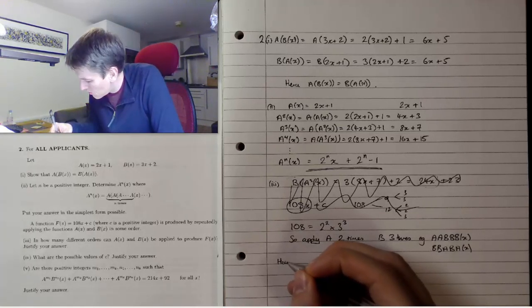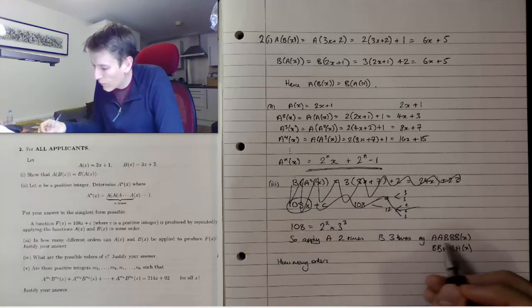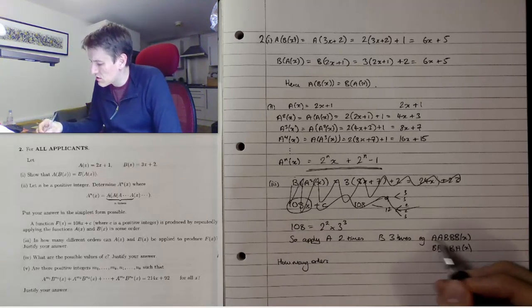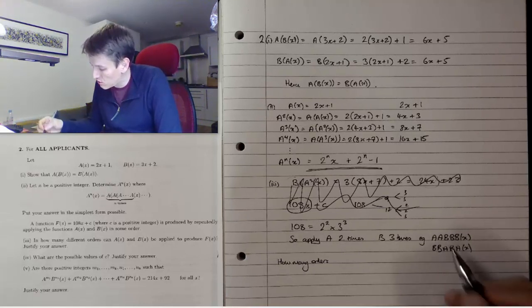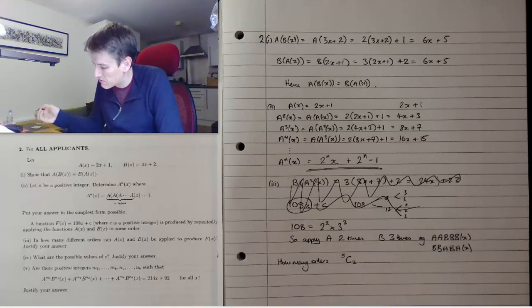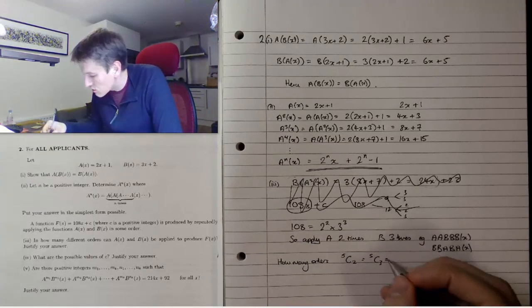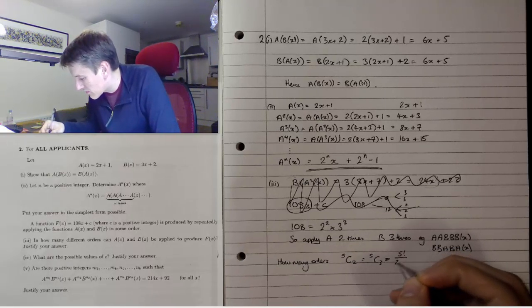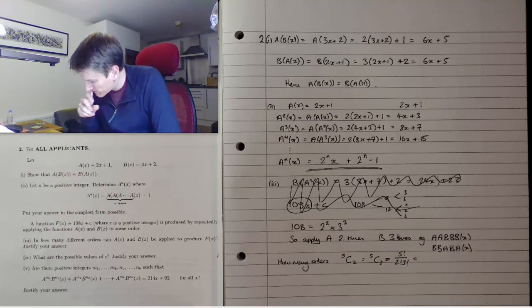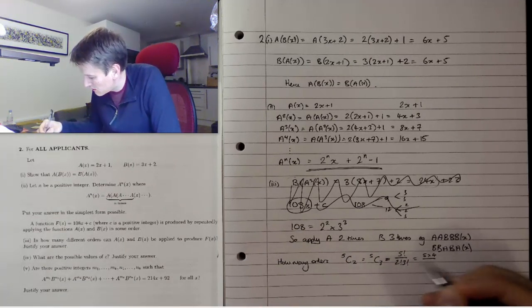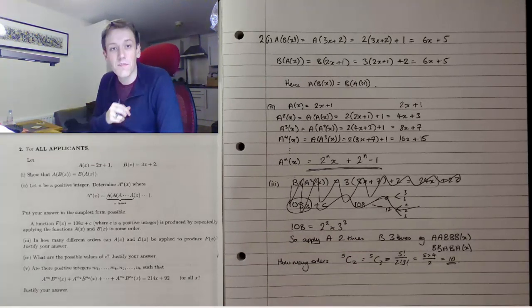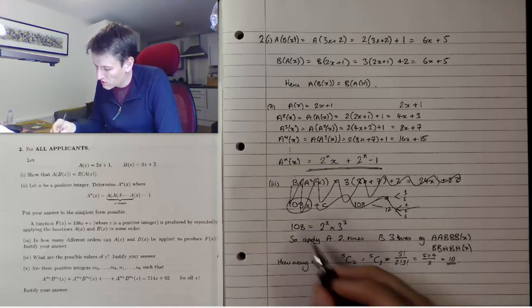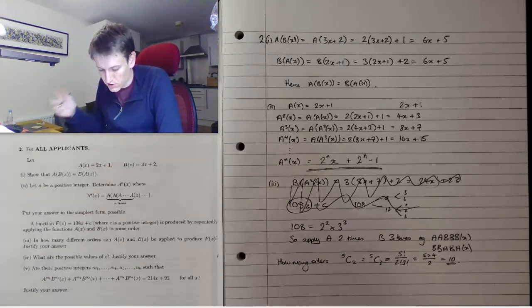So how many orders? It's essentially saying how many ways do I write down 5 letters, 3 of which are the same. You could think of this as I've got 5 positions and in 2 of those I need to choose to put the 2 a's. So the answer is 5 choose 2, or 5 choose 3. That's 5!/(2!×3!) = (5×4)/2 = 10. So there are 10 different ways of ordering the functions a and b.